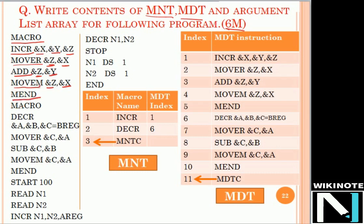This macro performs an increment operation. Similarly, the program has a second macro named DECR for decrement. It takes three parameters: &A, &B, and &C = BREG. The assignment &C = BREG implies a default parameter — wherever &C appears, it is replaced by BREG. Here, &A is the memory location, &B is the value to be decremented. The model statements move the contents of A into register C (which is BREG), subtract for the decrement operation, and store the result back into memory location A. This is the second macro — DECR.